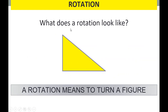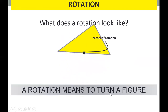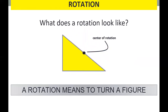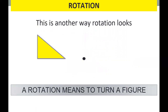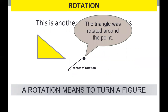What is rotation? What does a rotation look like? A rotation means to turn a figure starting from the center of rotation. The black dot here is the center of rotation — this is our guide. So this rotation is only turning a figure. The triangle was rotated around the point.